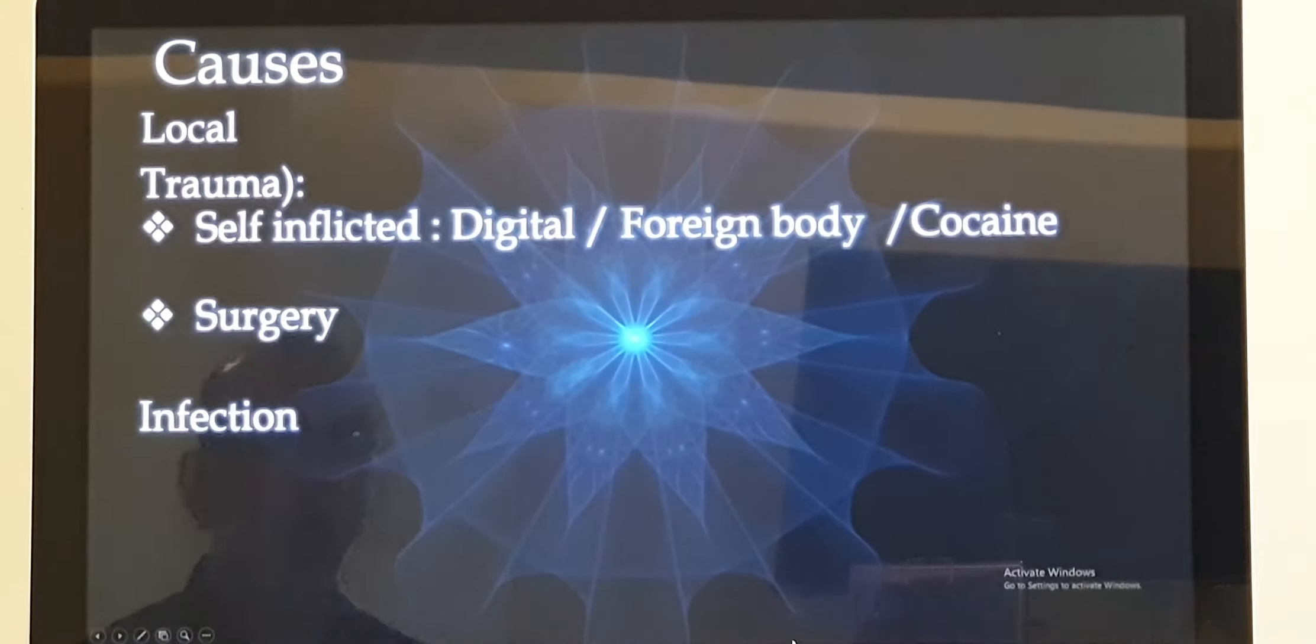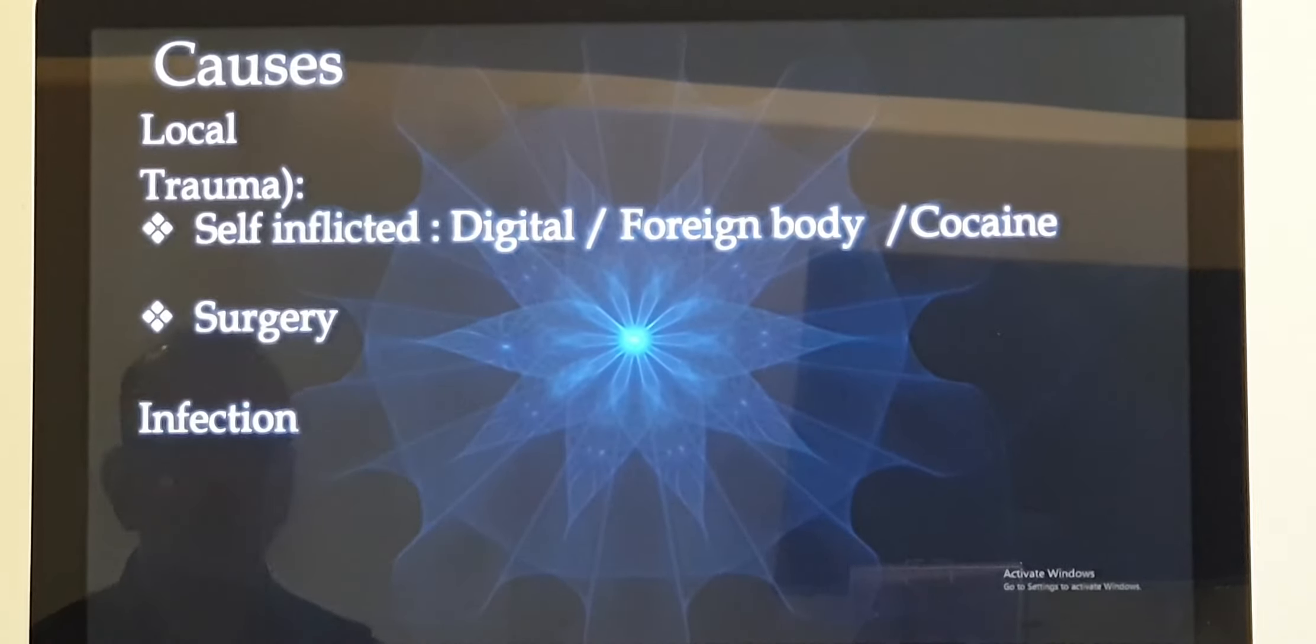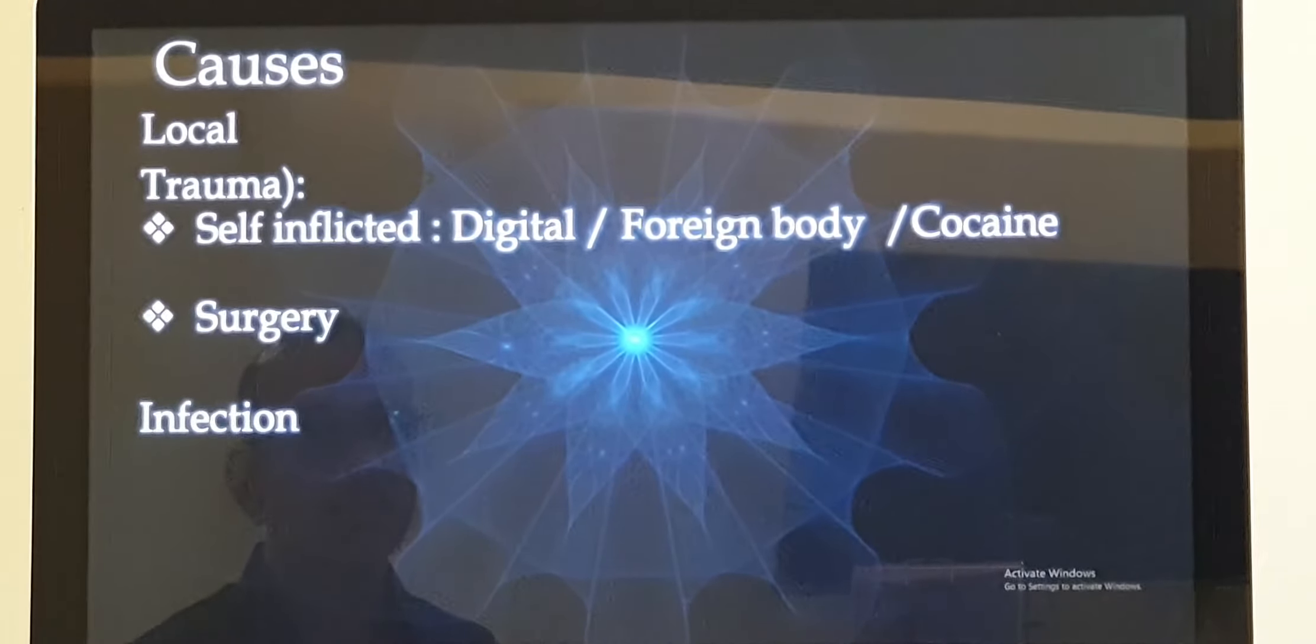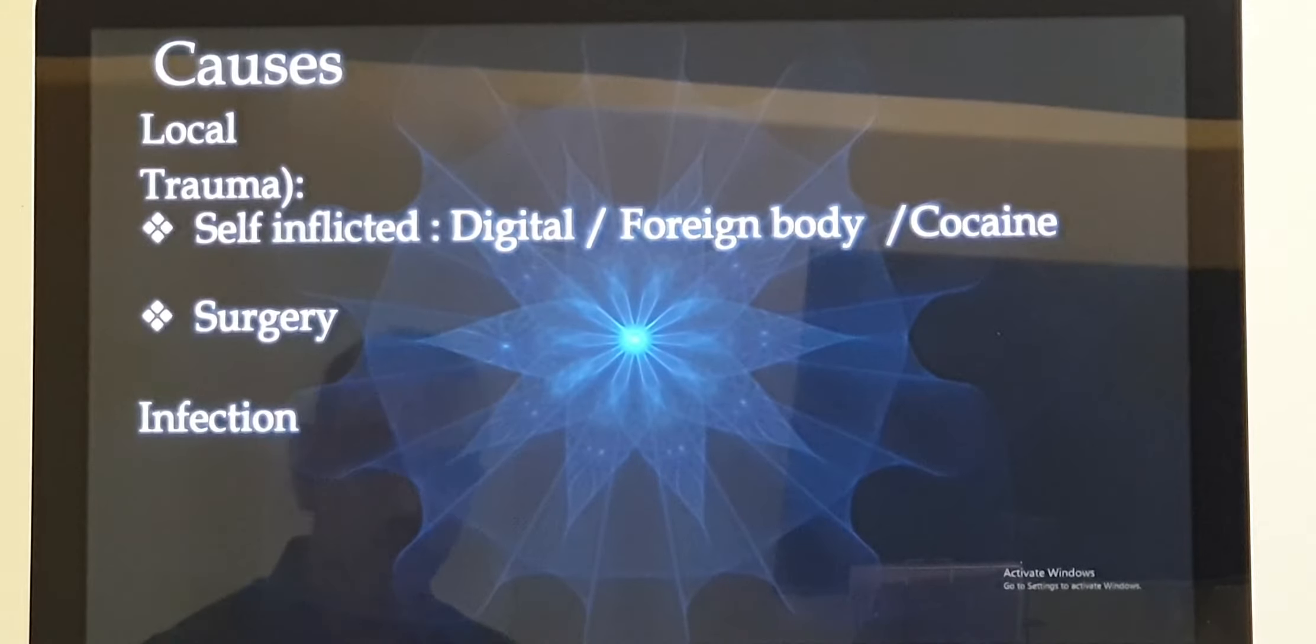Now coming to the causes, I will just mention a few common causes. Let us divide into whether it is a local cause or whether it is systemic. First we will deal with the local cause. Local causes are one, trauma, which can be self-inflicted like the children they keep on rubbing the nose, the digital manipulation which is one of the most common causes. Or maybe there is a foreign body in the nose or maybe the patient is a cocaine addict that also can have bleeding from the nose. And the second one being surgery, that is also very common.